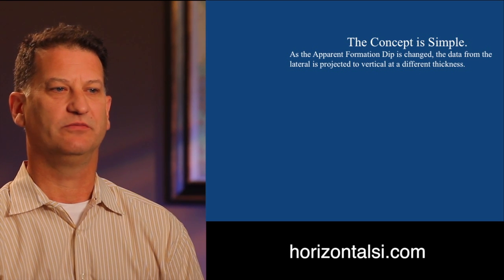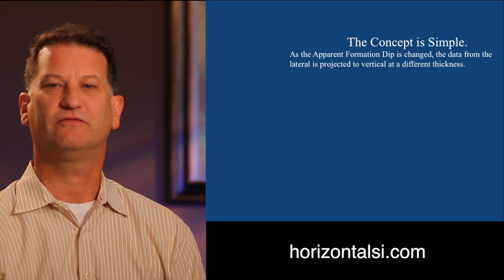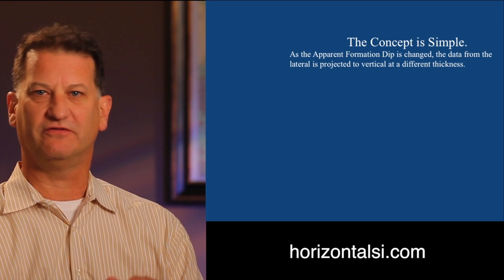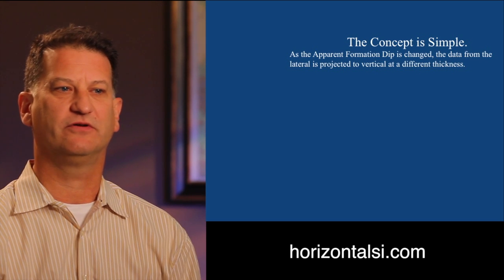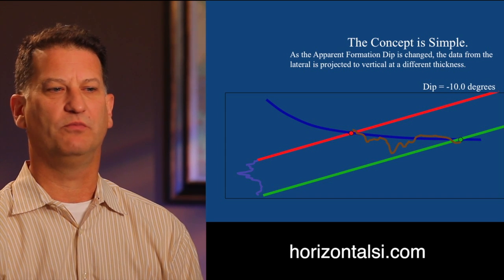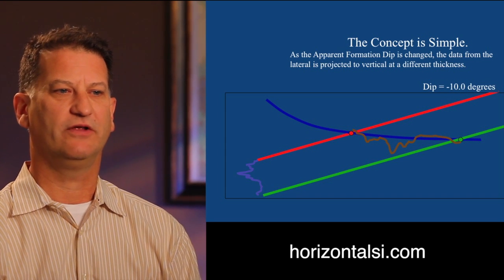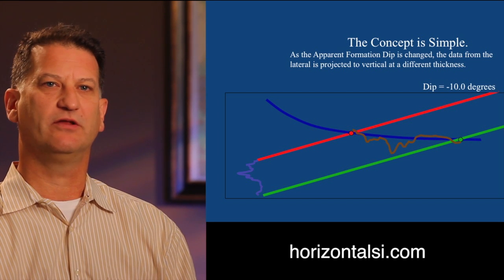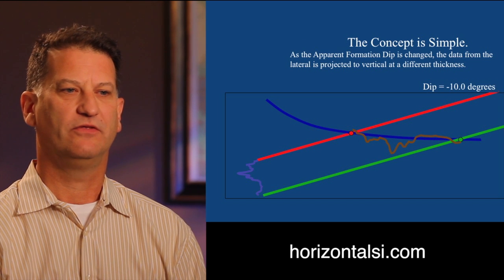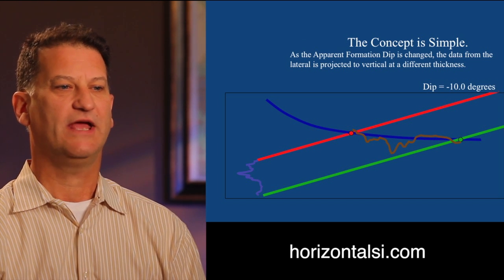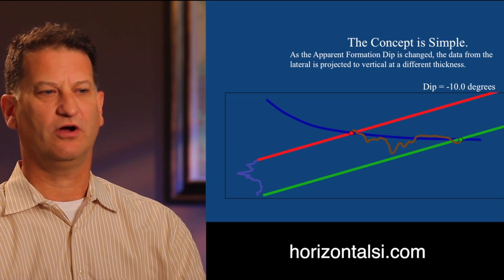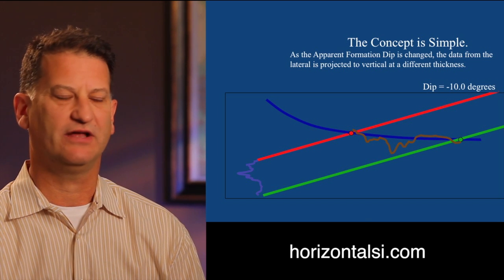The concept is fairly simple. As the apparent formation dip is changed, the data from the lateral is projected to vertical at a different thickness. In this diagram you see the wellbore in blue, the gamma ray in brown, and then the top of target in red, and the bottom target in green. The data is projected down the formation dip line to draw a vertical projection of that data.